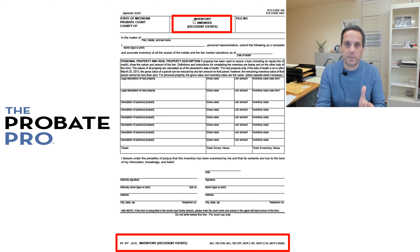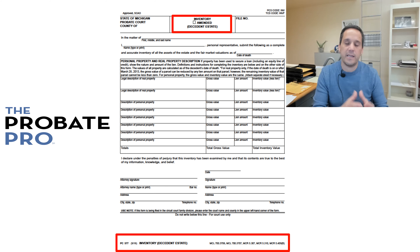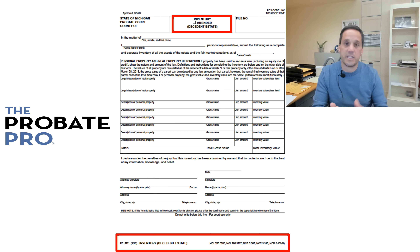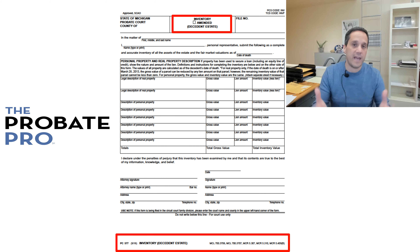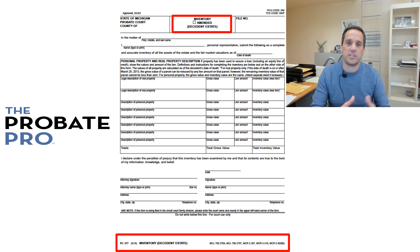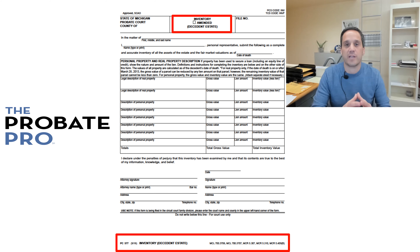This form gets completed and then served upon the interested parties, and that gross inventory fee must be paid either before the sworn statement to close is filed, the order for complete administration, or the petition for closing — or within one year. Failure to complete any of these steps subjects the personal representative to a deficiency, which could cause removal or sanction.